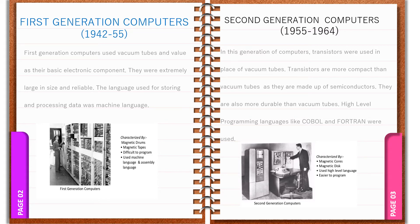Advantages of second generation computers include: smaller in size compared to first generation, more reliable, used less energy and generated less heat, wider commercial use, better portability, better speed with the ability to calculate data in microseconds, used faster peripherals, and also used assembly language. Disadvantages include: cooling system was still required, constant maintenance was needed, they were costly and not versatile, and were only used for specific purposes. Punch cards were also used.